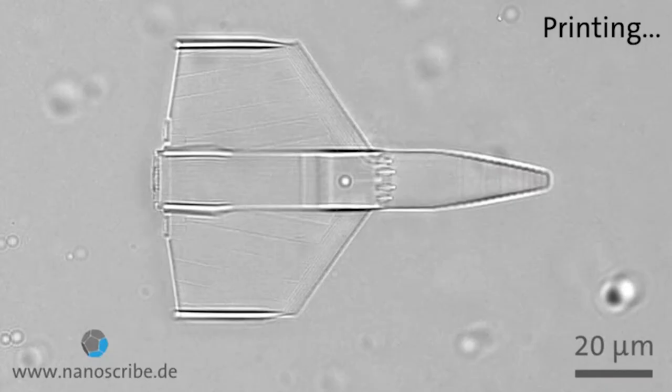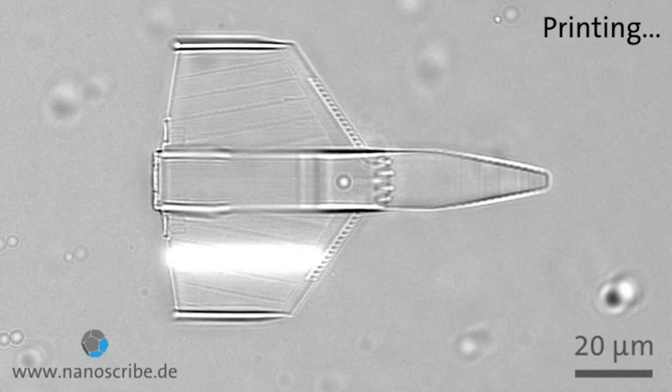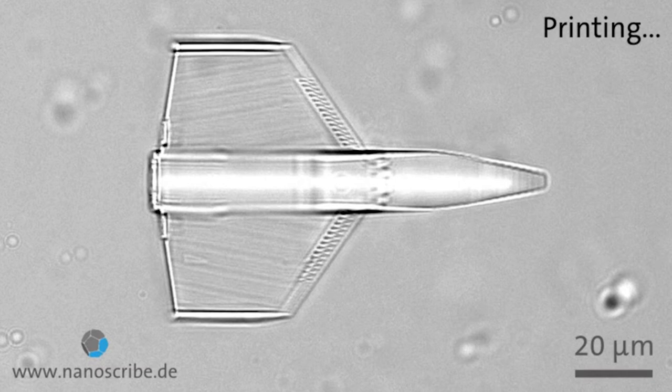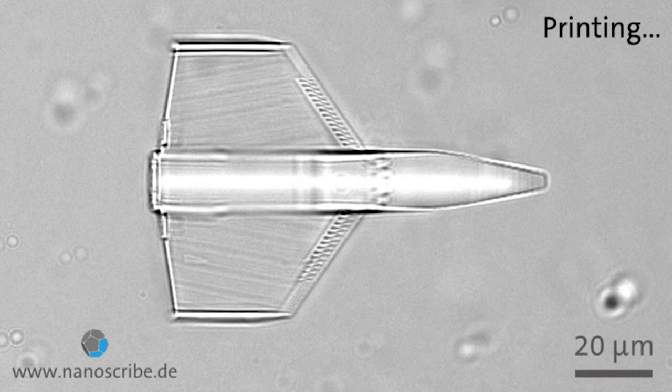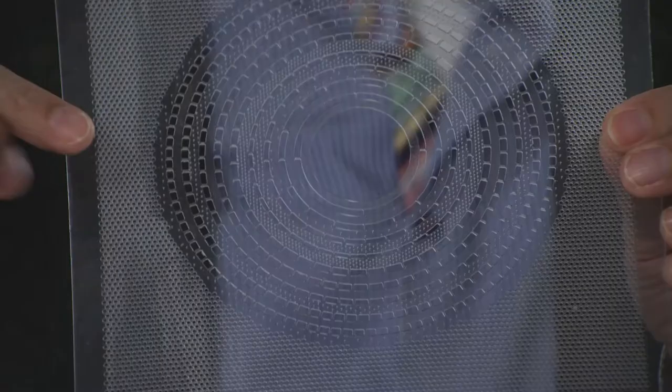The researchers produce the metamaterial with a laser beam focused on a light spot. When the light hits the molecule of a transparent photoresist, it causes a chemical reaction. The laser is like a pen.